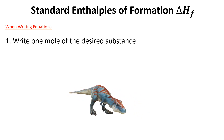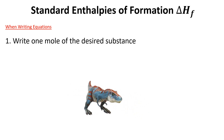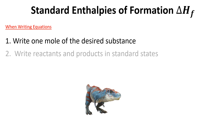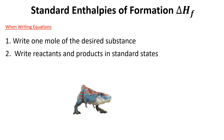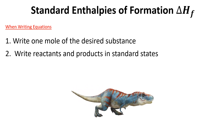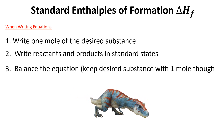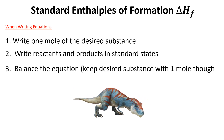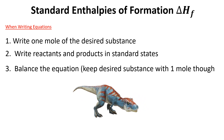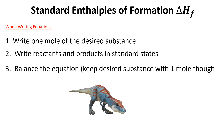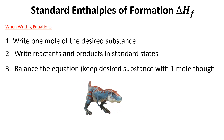There are a few rules to follow when writing a formation equation. First, write one mole of the desired substance. Second, write the reactants and products in their standard states. Third, balance the equation while keeping the desired substance at one mole. Let me show you what that looks like.